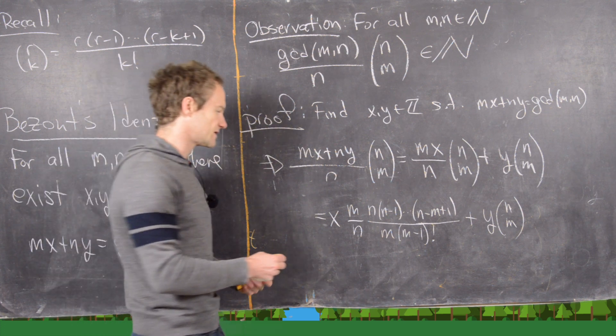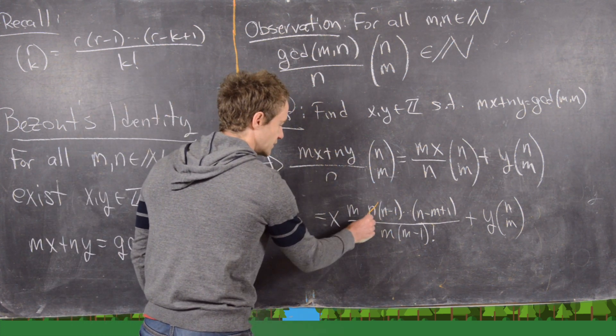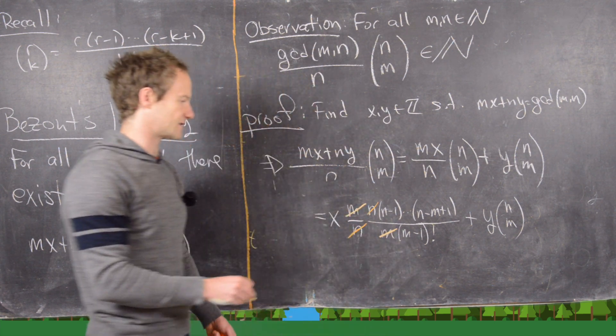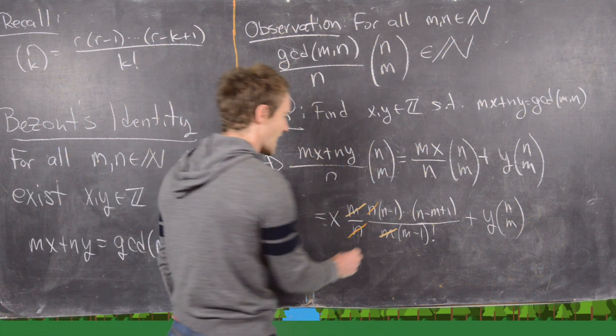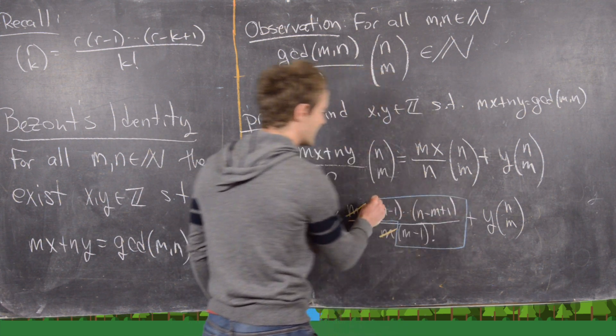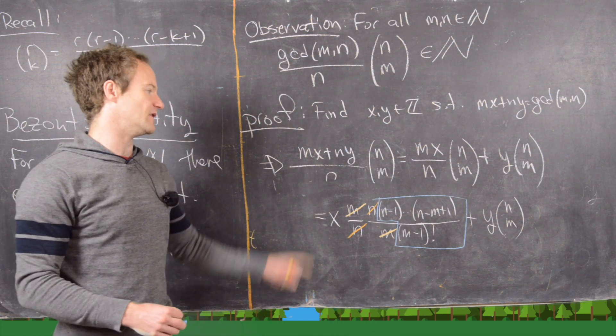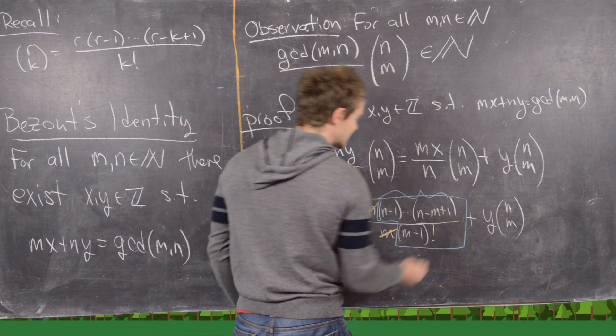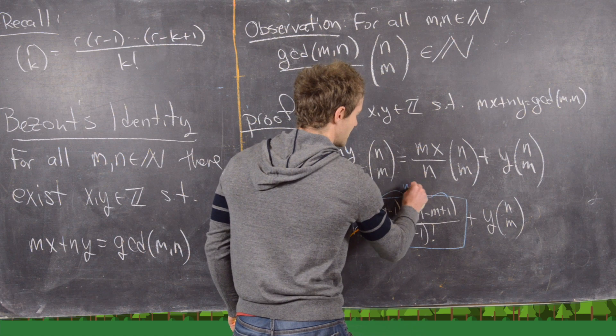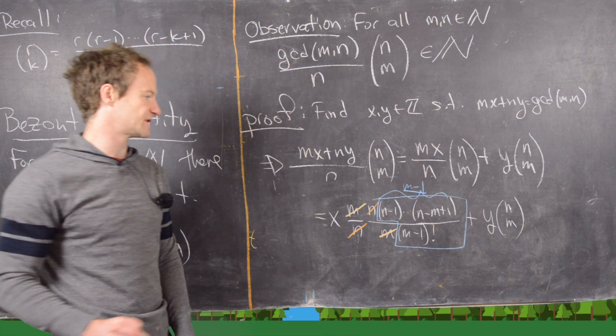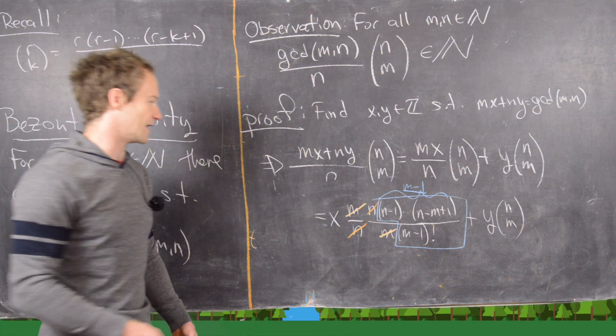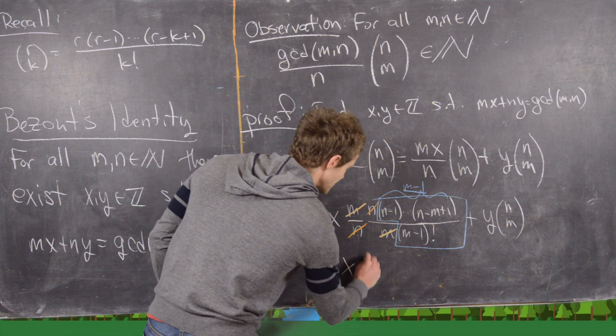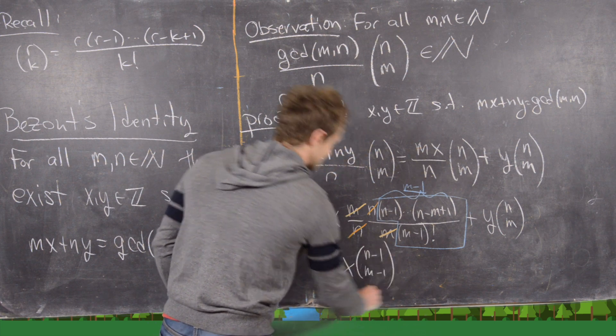Now let's cancel some stuff in this first term. So notice this n and this n cancel. And then this m and this m cancel. And let's look at what we have left. We have this falling product in the numerator that starts at n minus 1 and then has how many total terms? It has m minus 1 total terms. And then we have m minus 1 in the denominator. So that is exactly the definition of n minus 1 choose m minus 1.